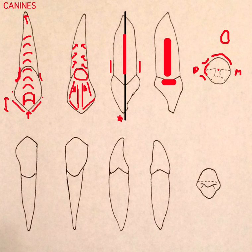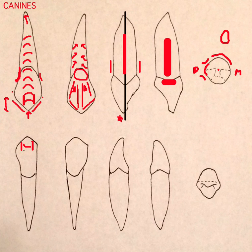Let's move on to the mandibular canine. Here we have the right mandibular canine, which is tooth number 27. We're going to see those two developmental depressions, and the middle facial lobe is going to be biggest once again. We'll get some convexity, not as much as the maxillary canine, but quite a bit.